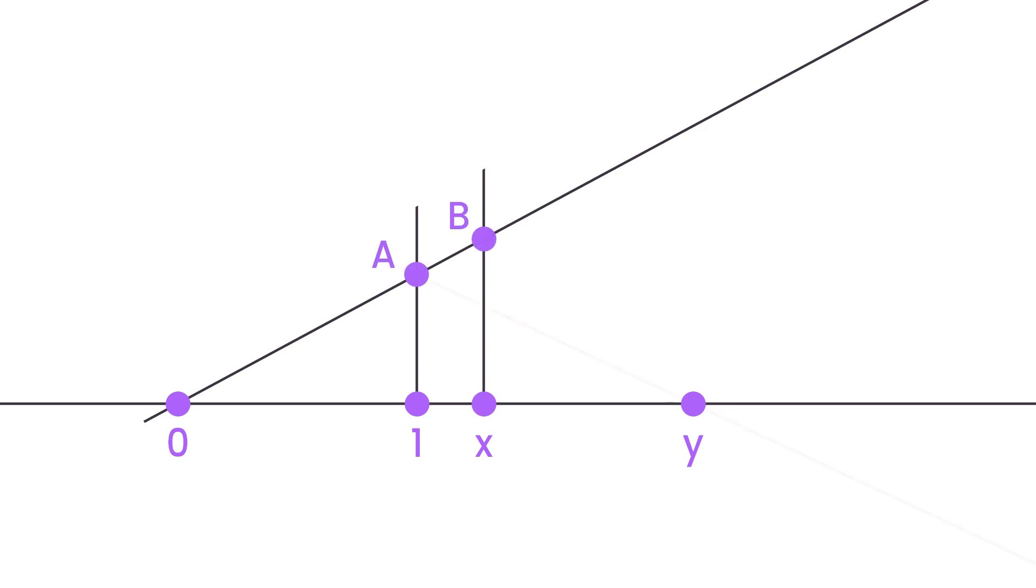Now we join point a with point y with yet another line. And finally we draw a parallel line through the point b. The intersection of this line and our number line is exactly x times y.